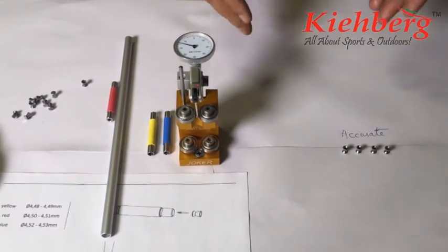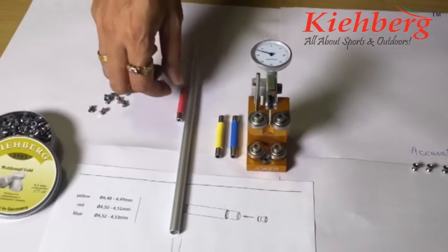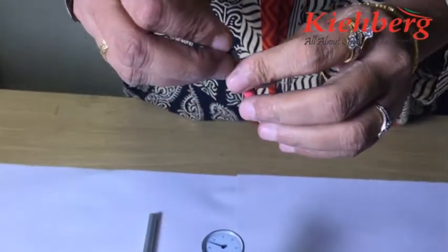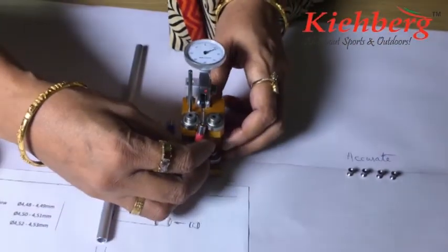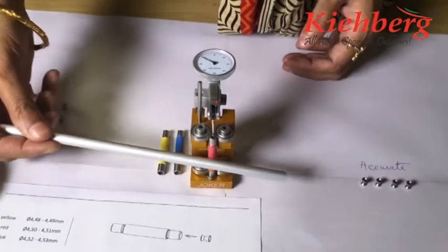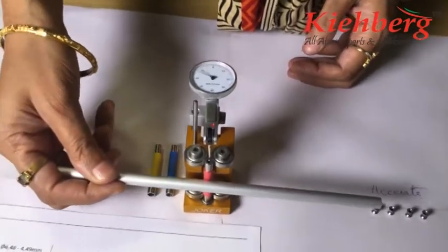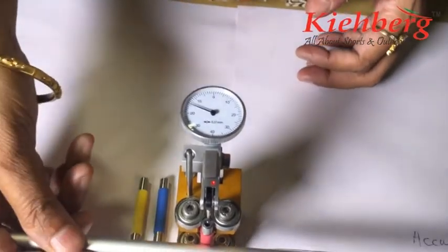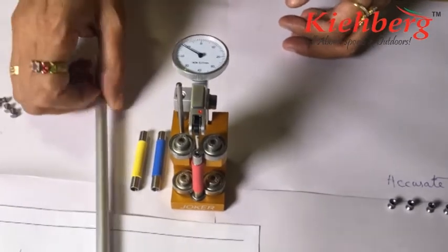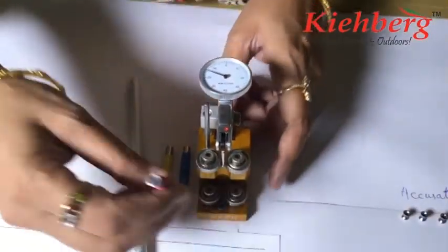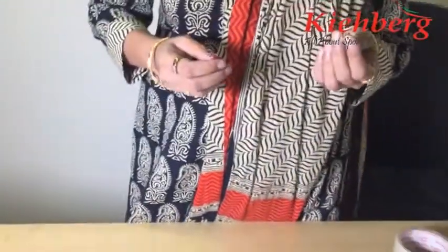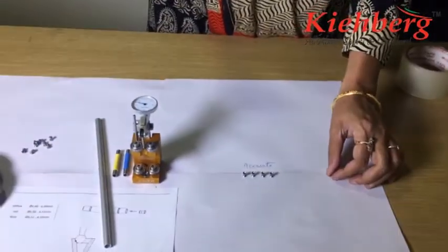Now let us test another one and see how accurate is this. See, the pointer is flickering a lot. This means that definitely this is an air pellet which I'm not going to choose for my finals, for my shooting, and I'll reject this pellet.